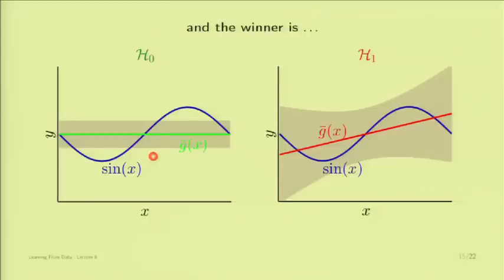So you can tell your friends that in order to approximate a sine function with two data points, you're better off using a constant than a general line. The lesson learned: in a learning situation, you are matching the model complexity to the data resources you have, not to the target complexity. I don't know the target, and even if I knew its complexity level, I don't have the resources to match it — because if I match it, I'll have the target in my hypothesis set but will never arrive at it.